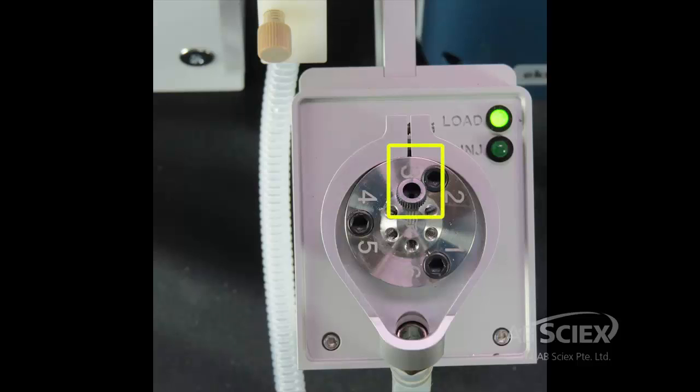The injection port is fitted to port 3 of the injection valve. Please see the replacing the injection port module for further information on how to install correctly.